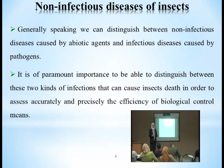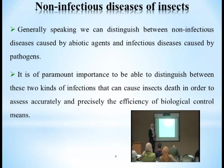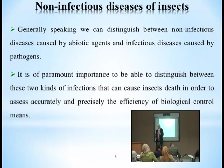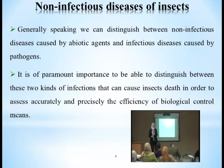العوامل الأبيوتيكية (غير الحيوية) تشمل درجات الحرارة، الرطوبة، الإضاءة، والكائنات الحية الأخرى. من الضروري التمييز بين هذين النوعين من الأمراض لتقييم كفاءة وسائل المكافحة الحيوية بدقة؛ فعند استخدام عامل بايوكنترول يجب التأكد هل موت الحشرة ناتج عن الإصابة بالميكروأورغانيزم أم نتيجة وفاة طبيعية.